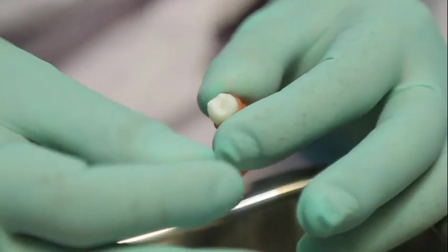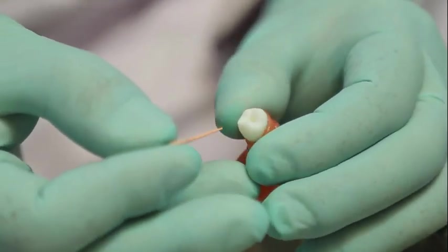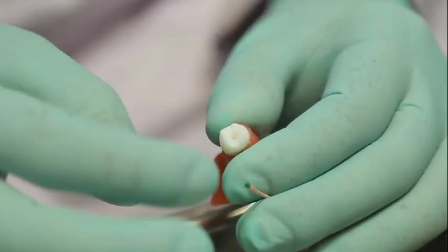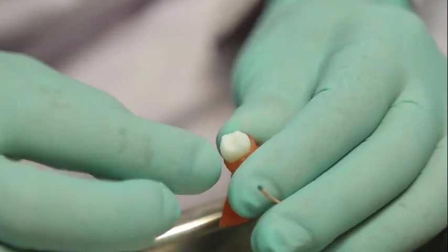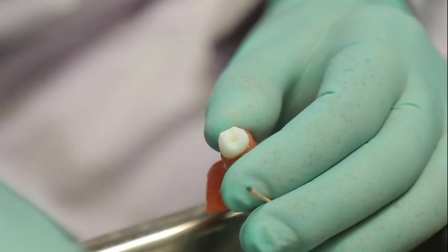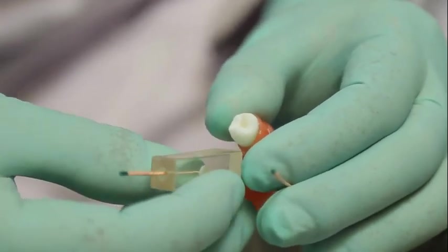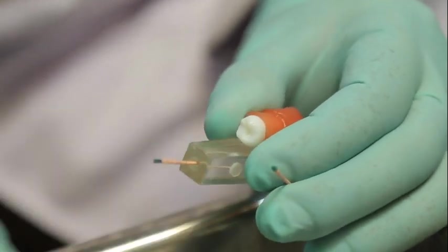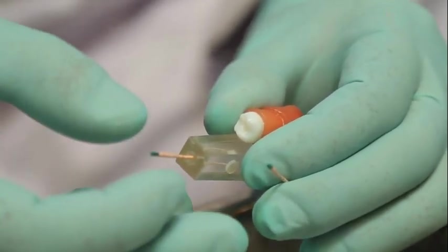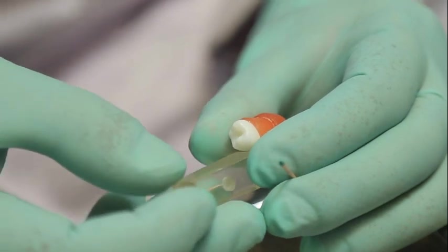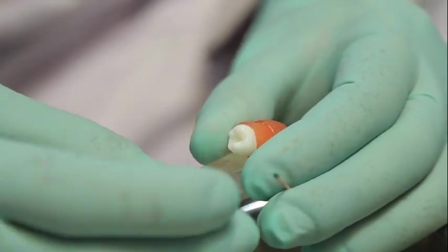I am going to demonstrate the technique of ultrasonic aided lateral compaction. We had selected a lower premolar as the demo tooth and I will also demonstrate the procedure on an endo block. Both of these canals are prepared up to 4% taper size 35 and the master cone has been adjusted 0.5 to 1 millimeter short of working length.